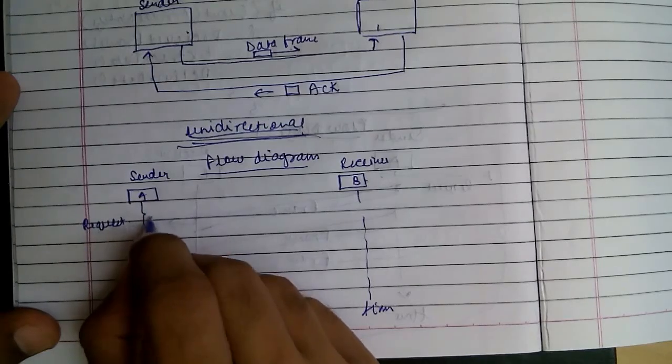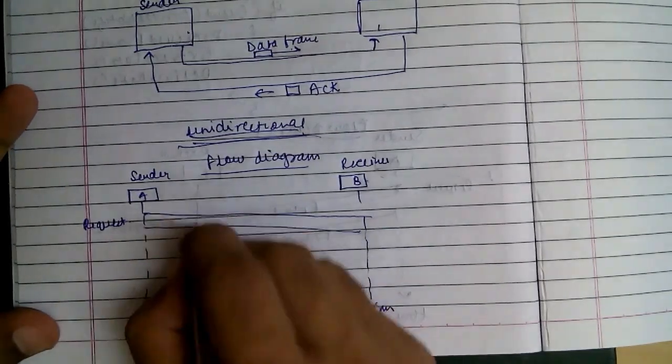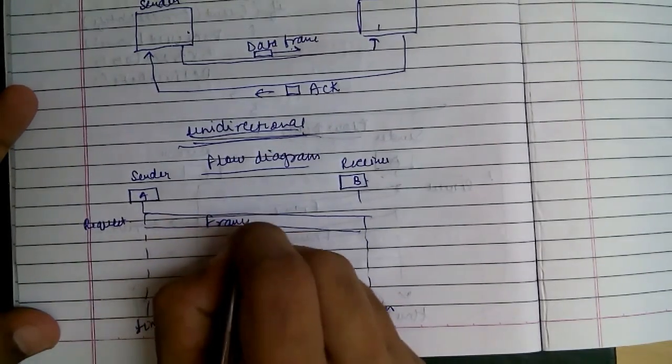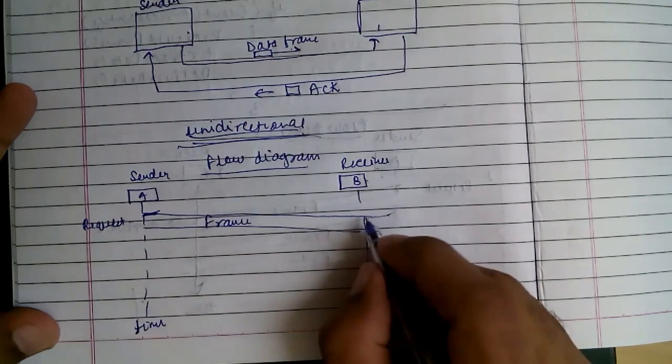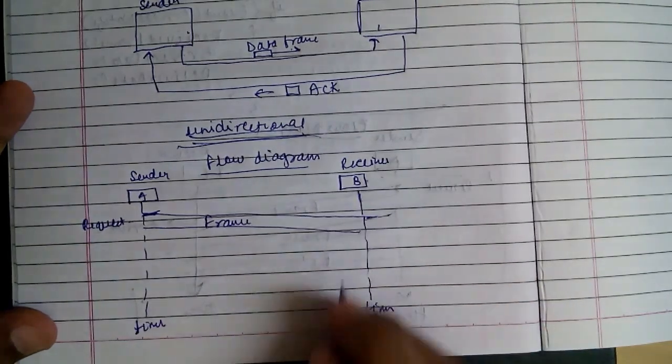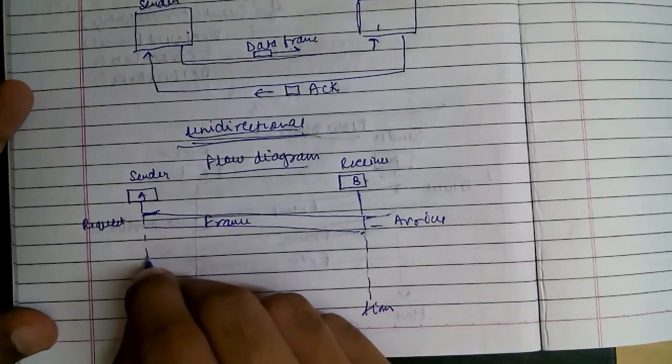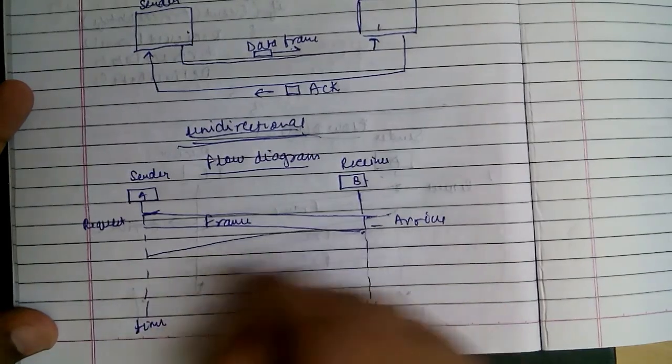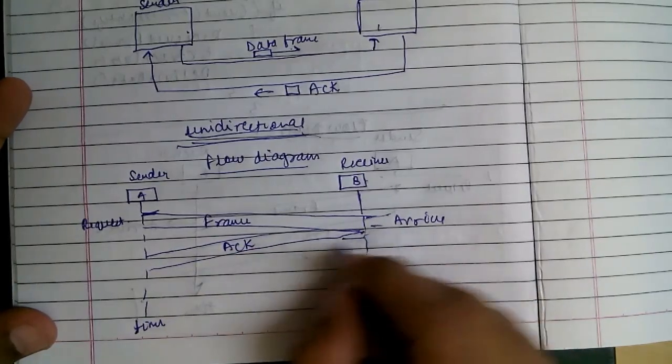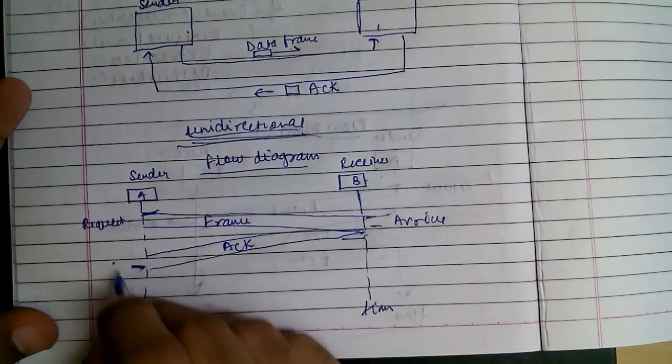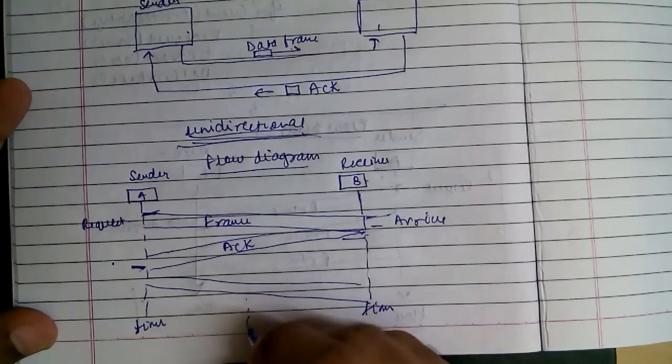So when a frame is requested by the network, the sender sends the frame which arrives after some time at this point. It sends the frame at this point which arrives after some time at B. When B receives the frame, it sends back an acknowledgement signal. It sends the acknowledgement signal and when it receives the acknowledgement signal, it sends the next frame. And this process goes on.